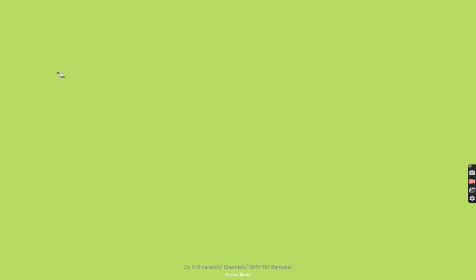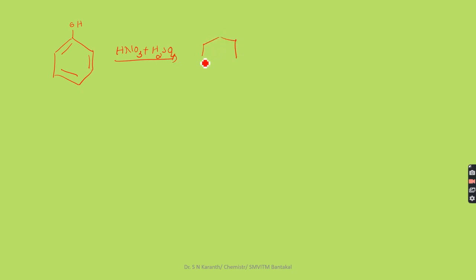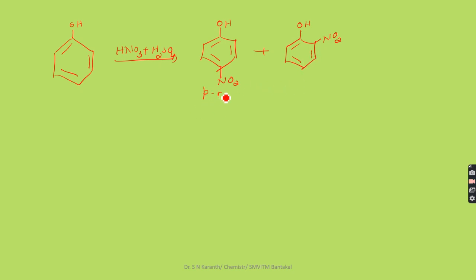The reaction begins with a simple molecule like phenol. Phenol on reaction with a nitrating mixture, that is HNO3 plus H2SO4, gives two compounds: paranitrophenol and orthonitrophenol. Paranitrophenol is very stable and the yield is very high compared to orthonitrophenol.